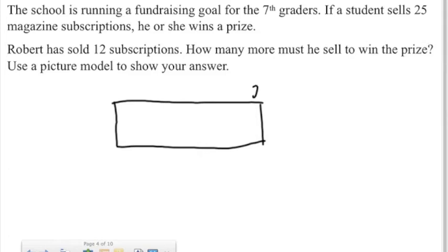25 is the goal, and zero is where we start. So we know that Robert has sold 12 subscriptions. So what I want to do is try to figure out how much is left out of that 25. Well, halfway to 25 would be 12 and a half, which isn't really what you're going to sell subscriptions by. You're not going to sell half of a subscription. But I know that 12 is somewhere in this range, near the 12 and a half. So that's about 12.